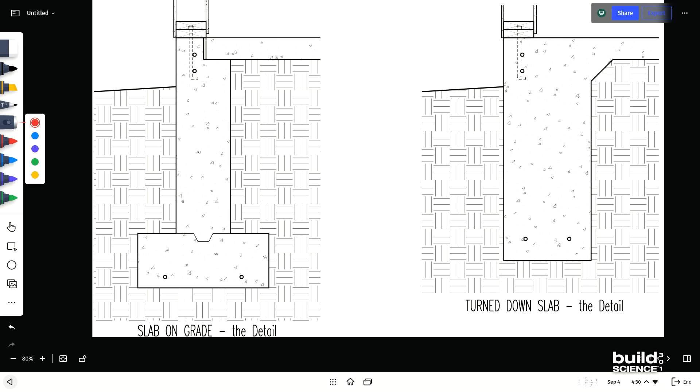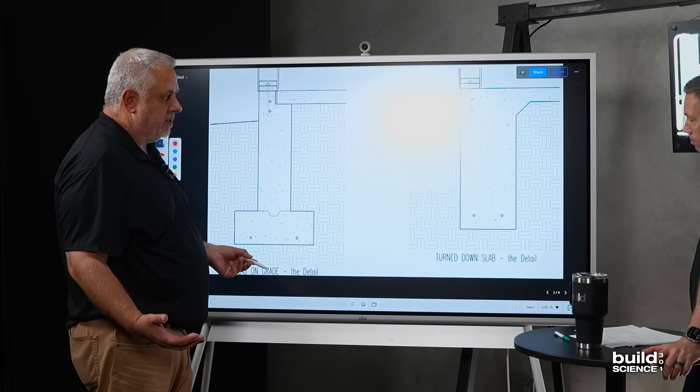The detail: Slab-on-grade. This is pretty standard. Footing, stem wall, and then some kind of shelf. Pretty standard. I call it a three-piece foundation.